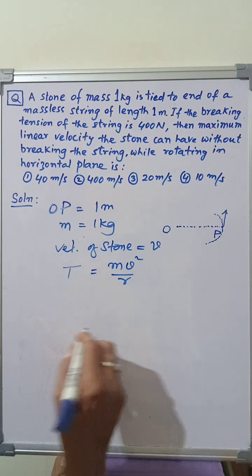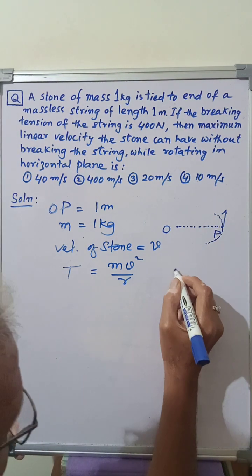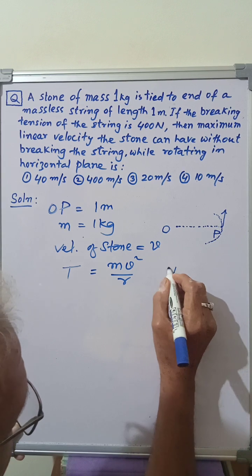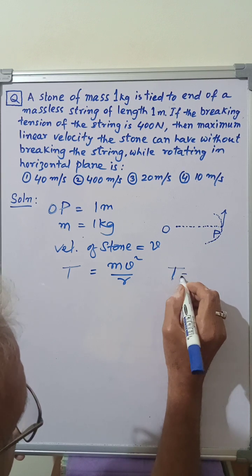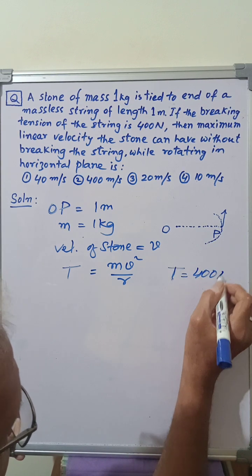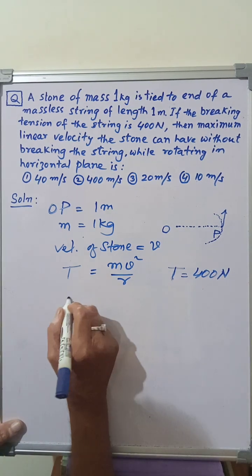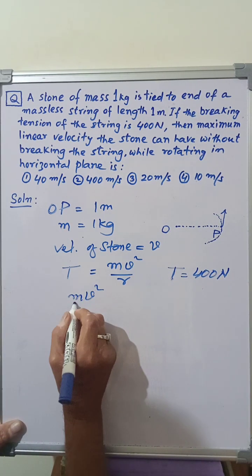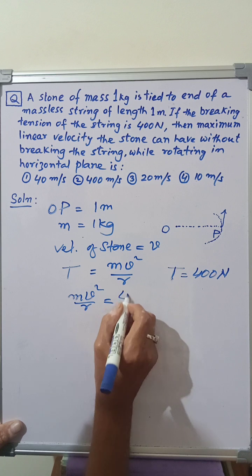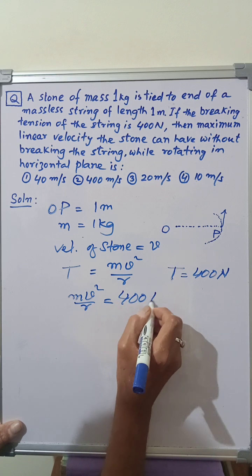Now, it is given in the question that the breaking tension of the string is equal to 400 newtons. Therefore, we can write M V square by R is equal to 400 newtons.